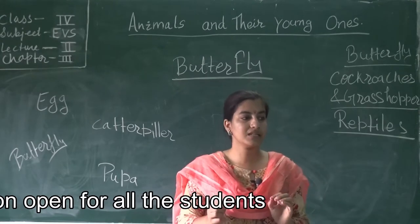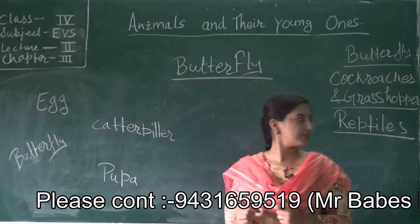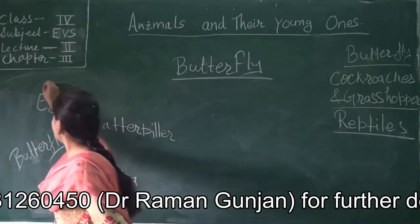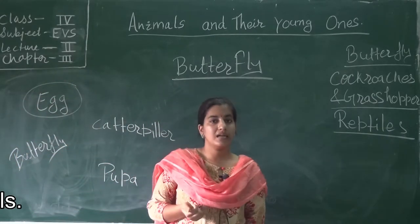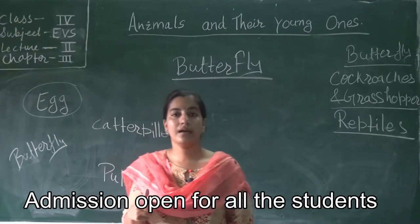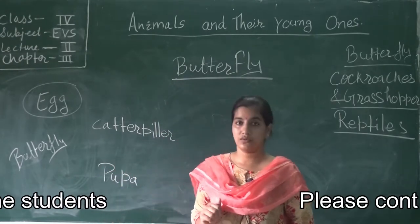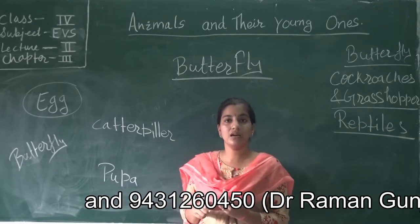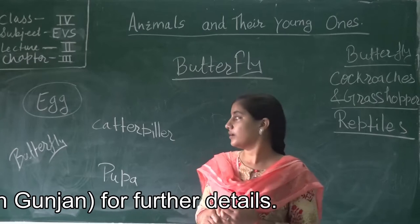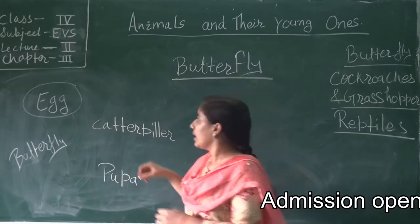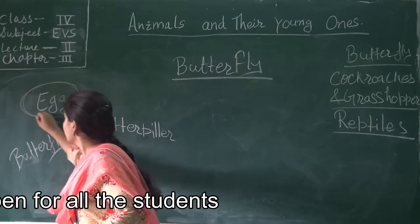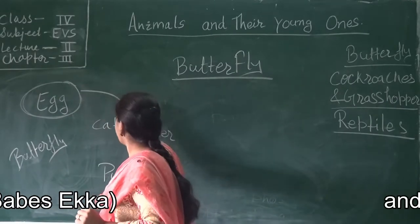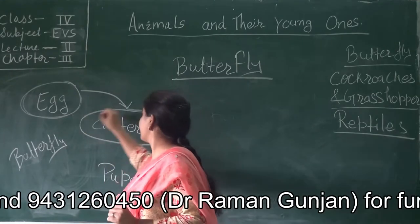A small worm-like creature comes out from the egg which is known as caterpillar. We already see this green color creature. Butterfly lays eggs on leaf — remember this because I am going to give you multiple choice questions and the exam is also going to happen. So you have to focus on different terms: where the different animals lay eggs, and also the name of different stages. After some time the egg becomes mature and it develops into a caterpillar.